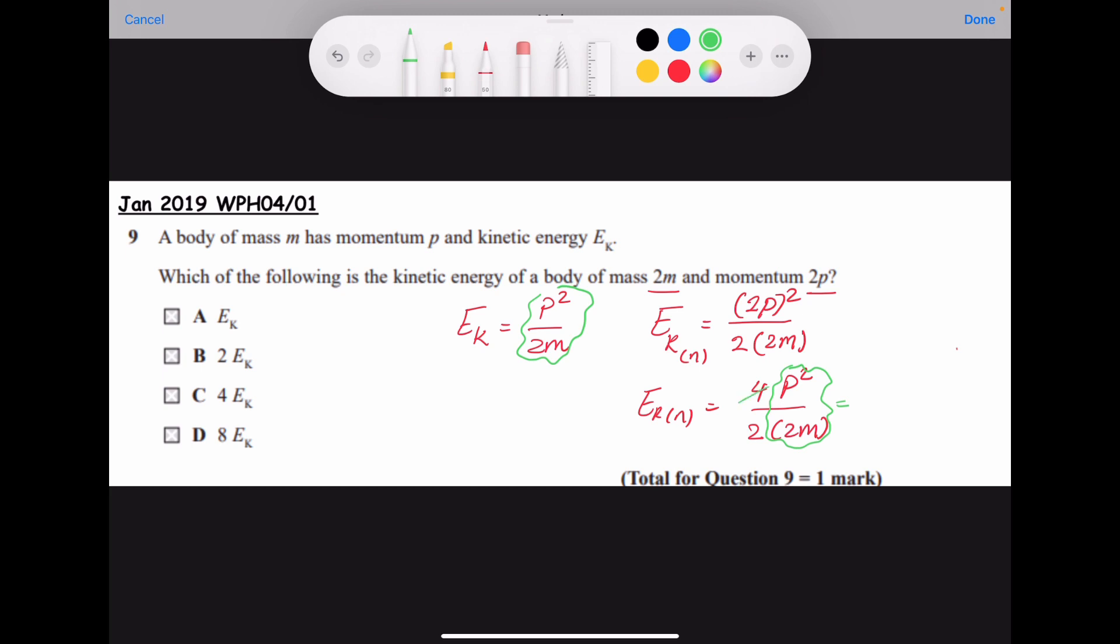I can cancel out the 4 divided by 2, so it's going to be 2 times p squared over 2m, which is the previous kinetic energy, which is ek.